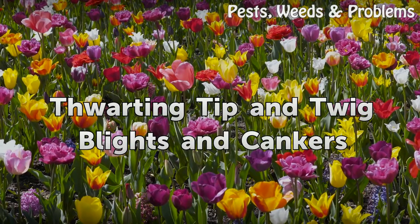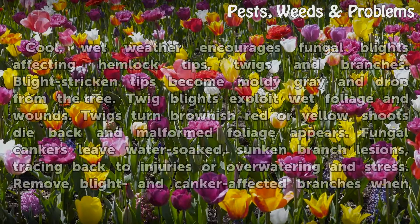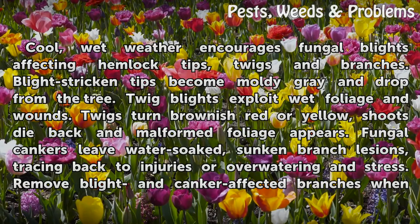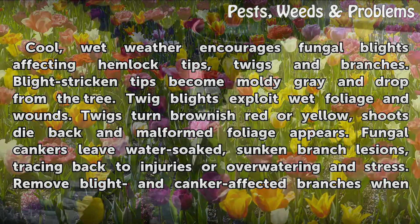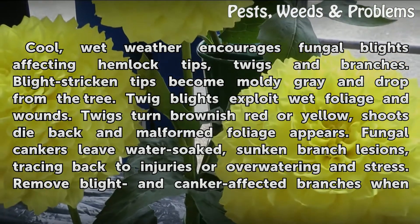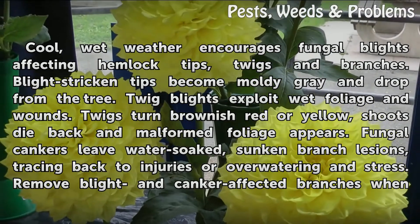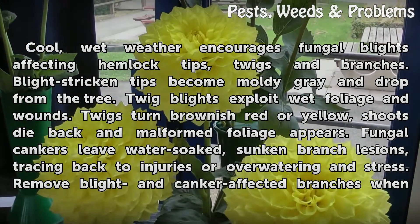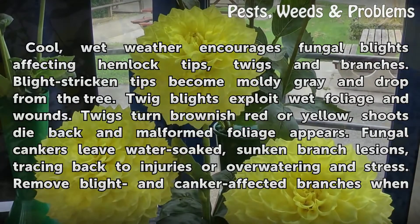Cool, wet weather encourages fungal blights affecting hemlock tips, twigs, and branches. Blight-stricken tips become moldy gray and drop from the tree. Twig blights exploit wet foliage and wounds; twigs turn brownish-red or yellow, shoots die back, and malformed foliage appears. Fungal cankers leave water-soaked, sunken branch lesions, tracing back to injuries, over-watering, and stress.